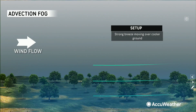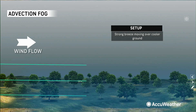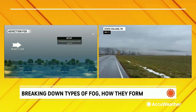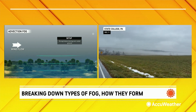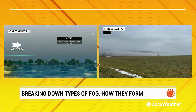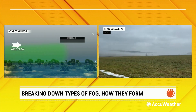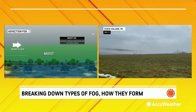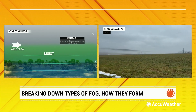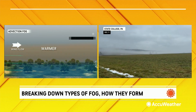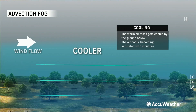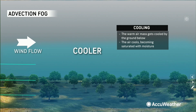There's another type of fog: advection fog. Wind is key here because this fog is moving with the wind flow into an area, rather than forming in that area due to warming. The setup: a strong breeze moves over cooler ground. Moist air is also part of this — it moves over the cooler ground with that wind flow. Then again, you have warmer air cooling near the ground below. It becomes saturated with moisture and then turns into fog.